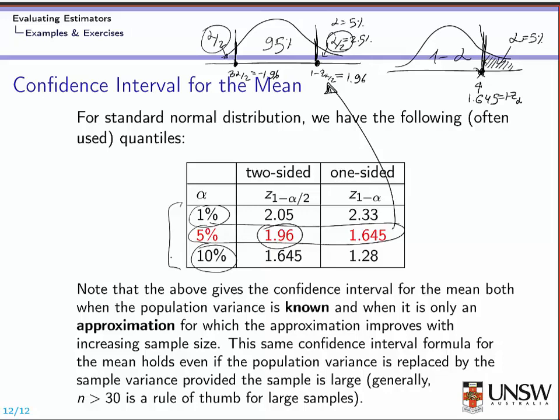The final note is that all the above gives the confidence interval for the mean when the population variance is known, and it is only an approximation that improves with increasing sample size. Whenever we say we can use this approximation, we mean the sample size is reasonably large, and we use as a rule of thumb n greater than 30. If the number of observations is small or the variance is unknown, you will have to use the t-distribution, which will be discussed during the lectorial.